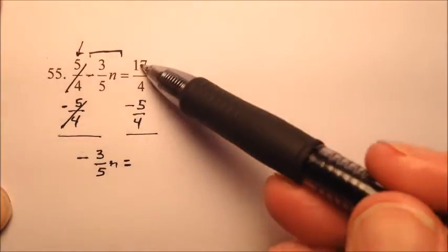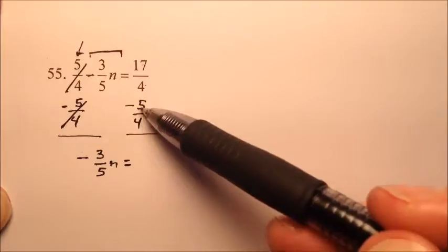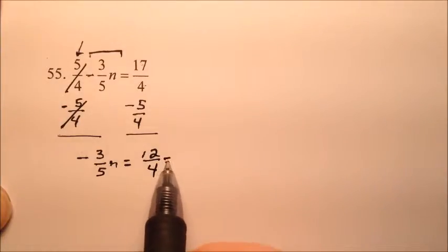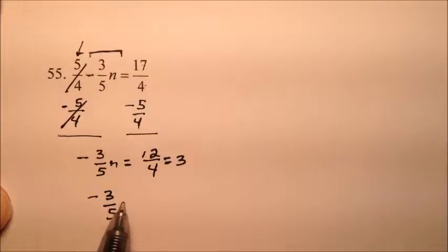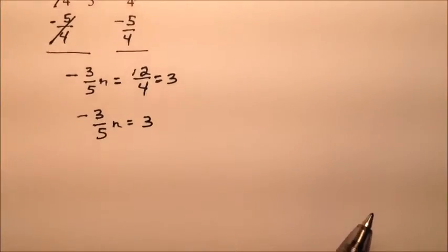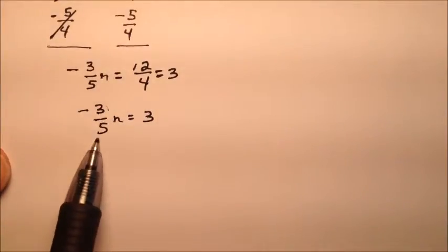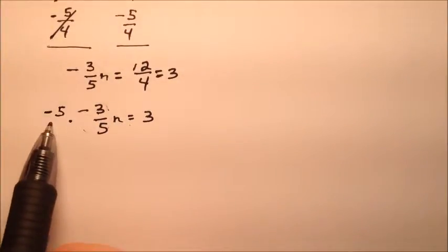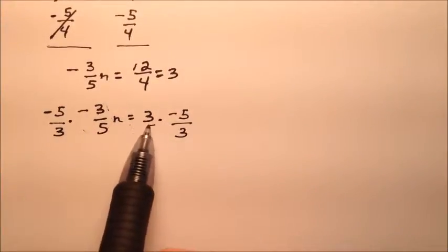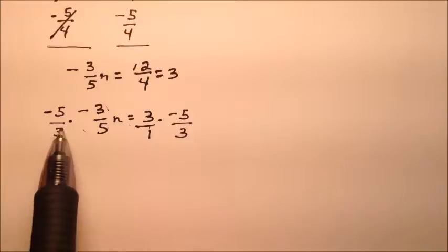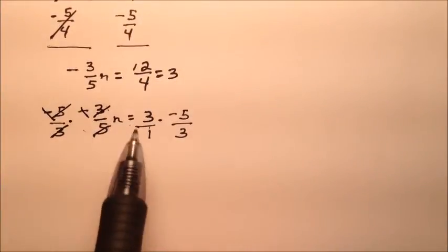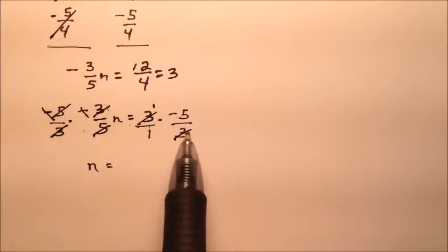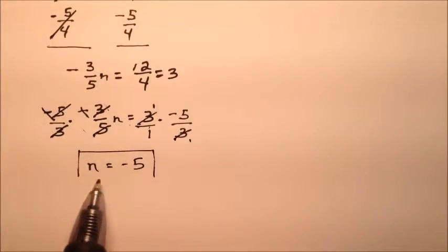So negative 3 fifths n equals 17 fourths minus 5 fourths. With common denominators of 4, that's 17 minus 5 equals 12 over 4, which simplifies to 3. So negative 3 fifths n equals 3. To isolate n, divide by negative 3 fifths, which is the same as multiplying both sides by negative 5 thirds. The 5s, 3s, and negatives all cancel, leaving n. On the right, the 3s cancel leaving negative 5. The answer to number 55 is n equals negative 5.